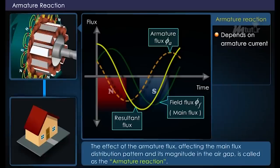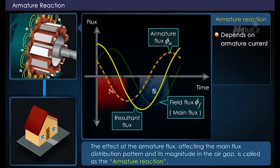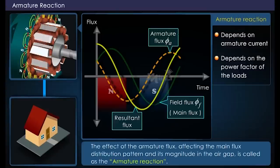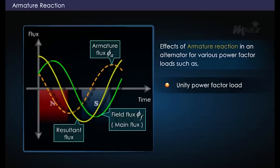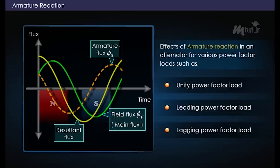This effect of the armature flux affecting the main flux distribution pattern and its magnitude in the air gap is called the armature reaction. The armature reaction depends on the current in the armature, which produces the armature flux, and is also dependent on the power factor of the connected load. Let us analyze the effects of armature reaction for unity power factor, leading power factor, and lagging power factor loads.